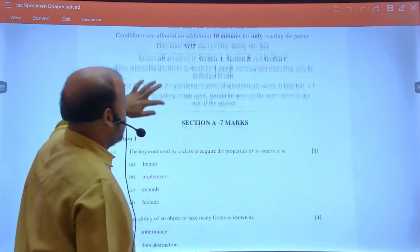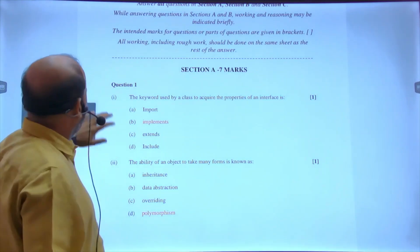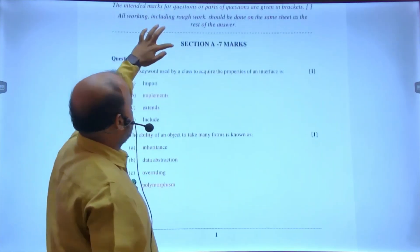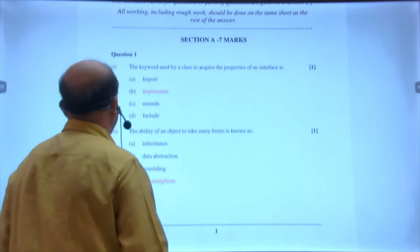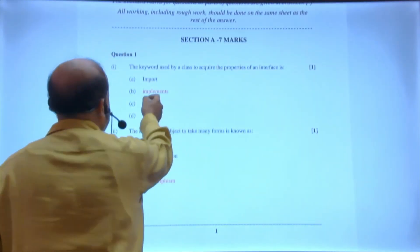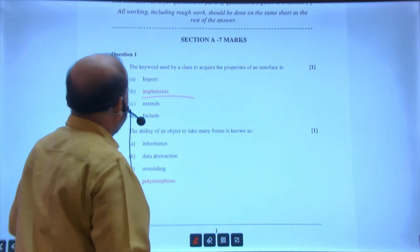First, let's do section A that is of seven marks. The first one: the keyword used by class to acquire properties of an interface - it will be implement, given in red. If you can see, it's given in red.